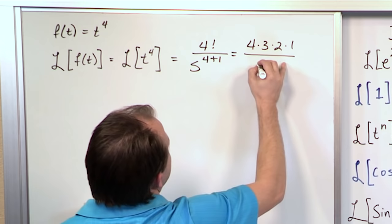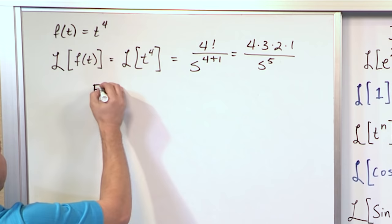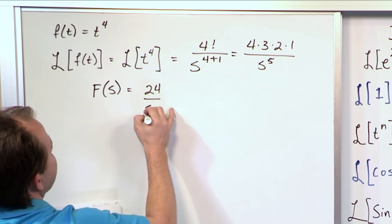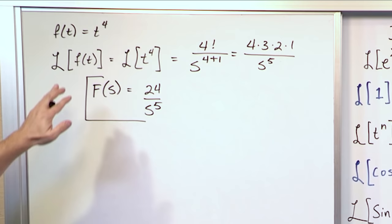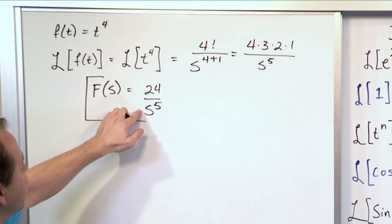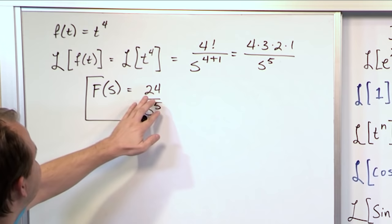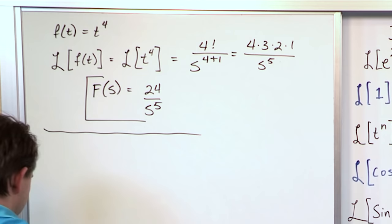And then 4 factorial is 4 times 3 times 2 times 1 over s to the fifth power. So what you're going to get is capital F, which is a function of s, which represents the Laplace Transform of the function f transformed into the s domain. 4 times 3 is 12 times 2 is 24 over s to the fifth. And that's what you would circle on your test. So you have transformed from t to the fourth into the s domain, which gives you 24 over s to the fifth. The f goes with the big F. That just lets you know that these are linked by this transform. But really, it's its own independent function of s, representing the function in the Laplace domain or s domain.